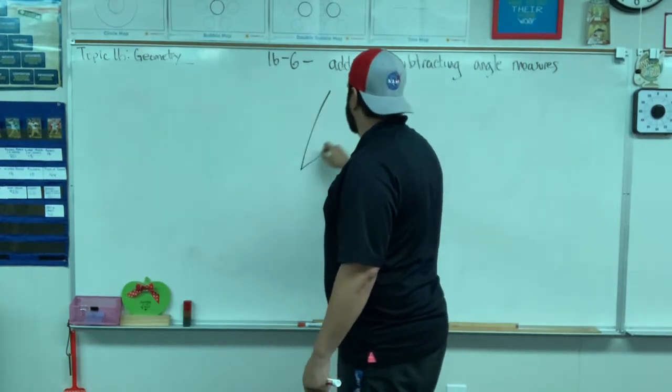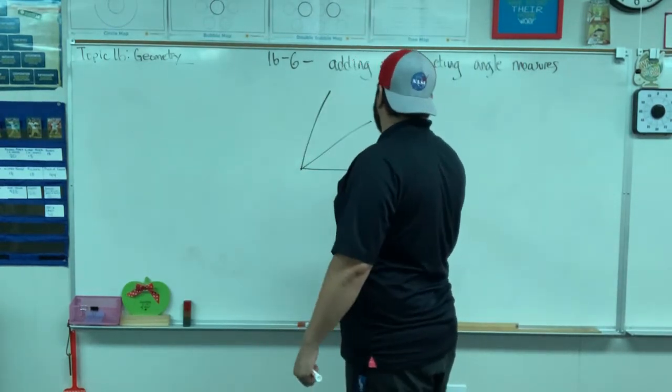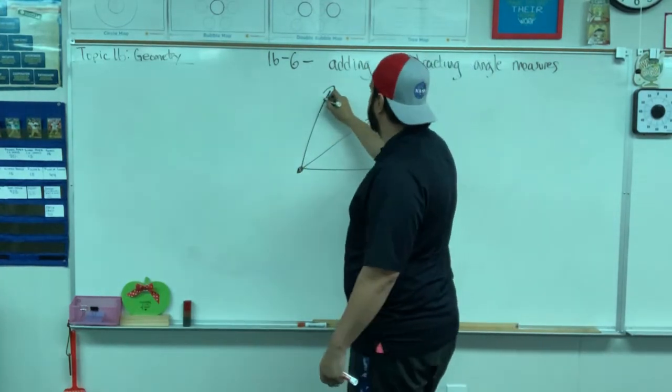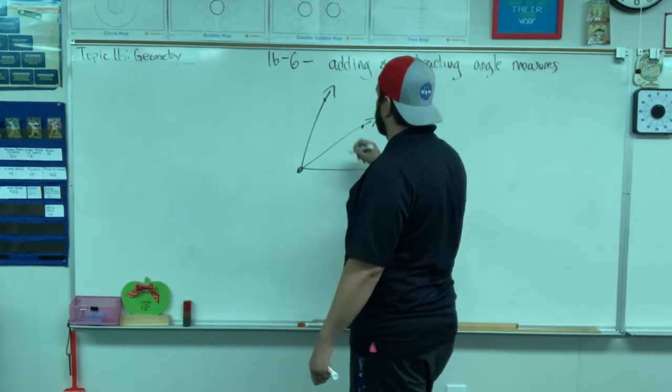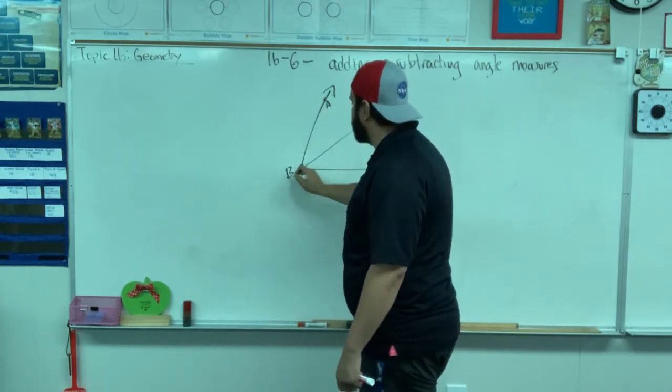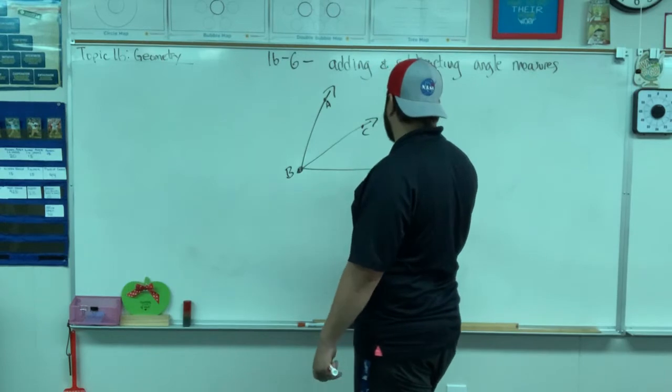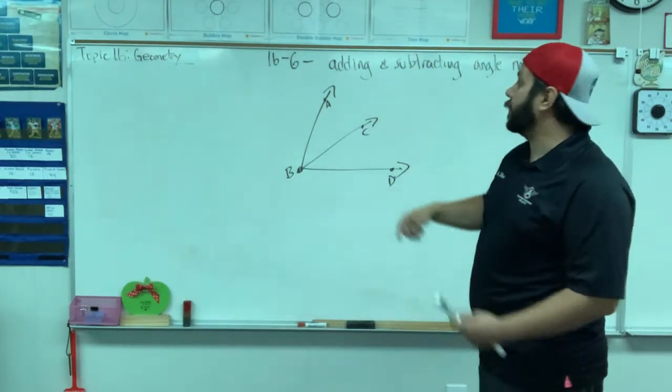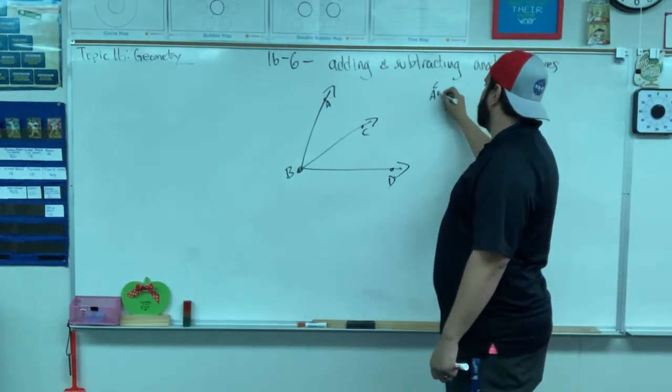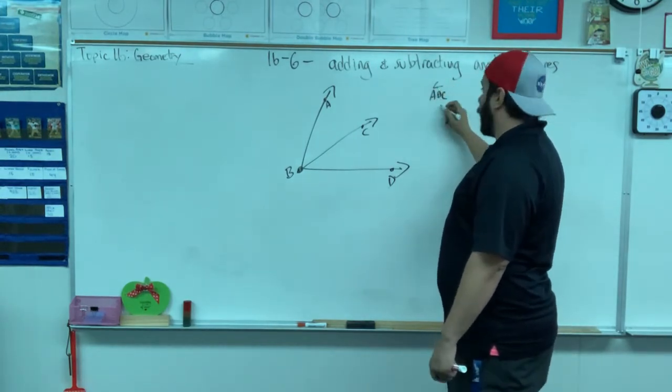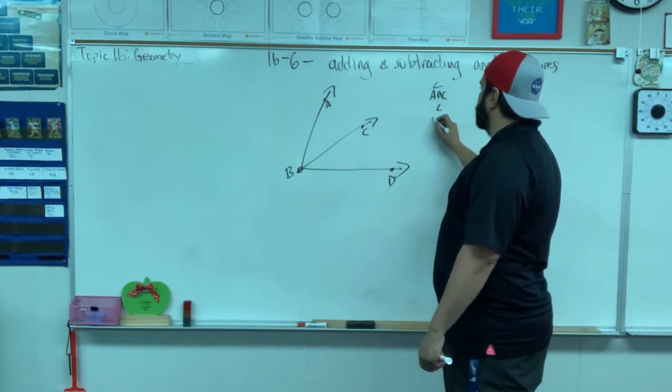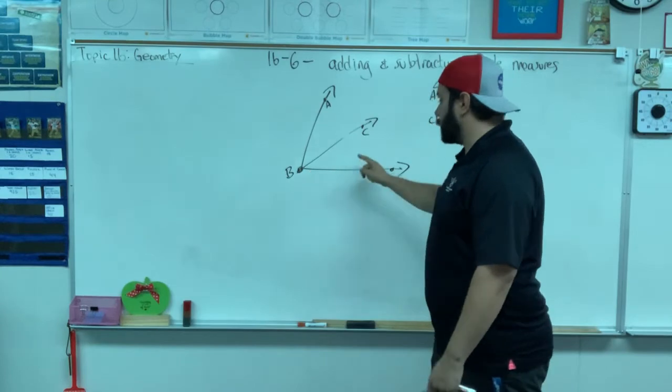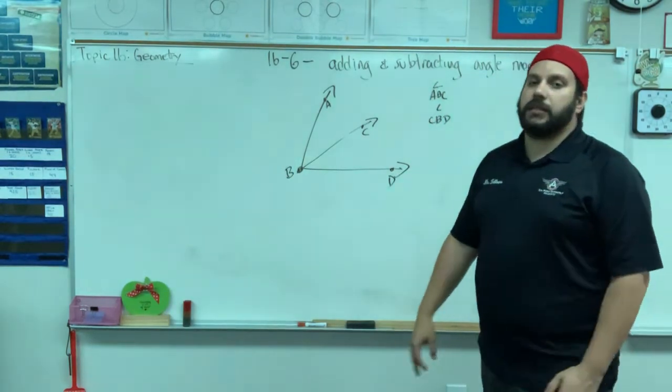So I'm going to draw two angles here that share the same vertex, and let me name them. This is A, B, C, and D. The two angles I have here are angle ABC and angle CBD. You put that vertex in the middle of your angle name.